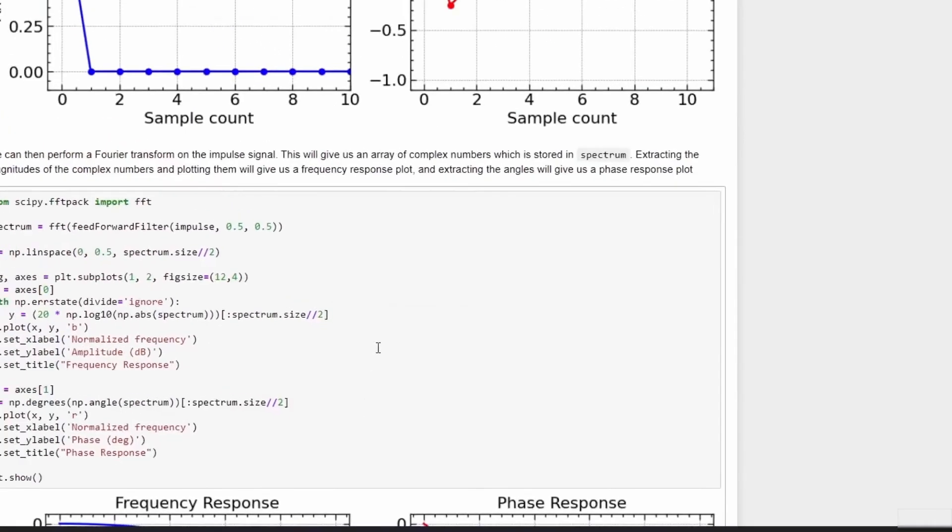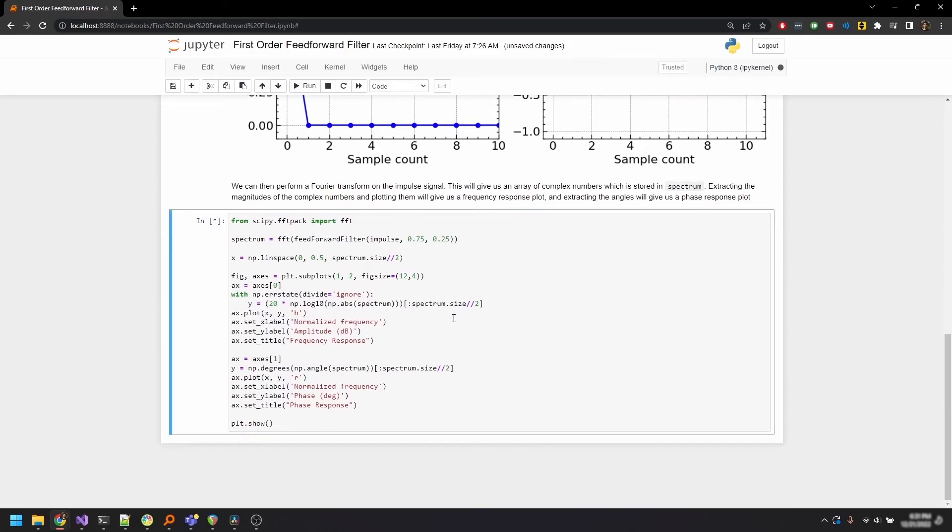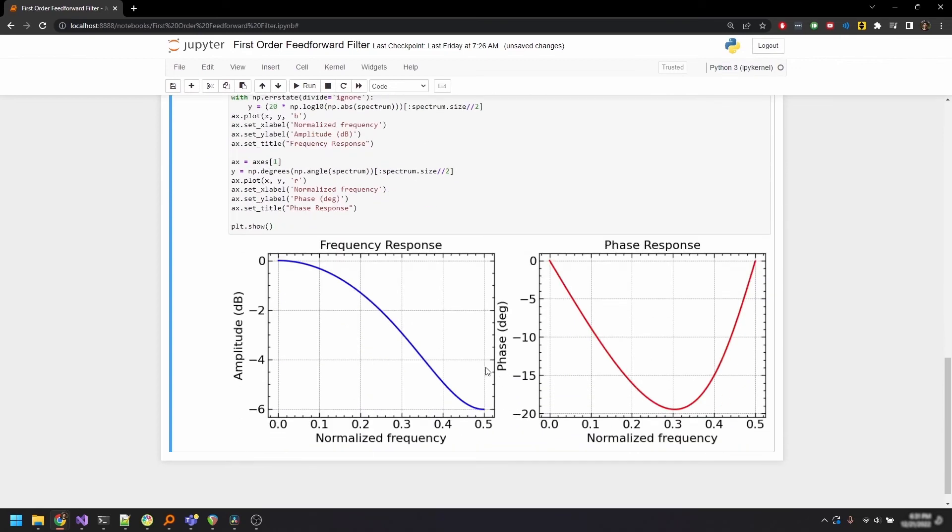So let's try putting in different values for the coefficients a0 and a1 and see what happens. I'll go with 0.75 and 0.25. Well, we get a general low pass filter type, but the attenuation is not much here, it's only about negative 6 decibels.